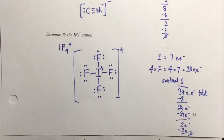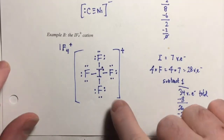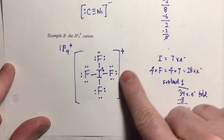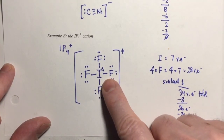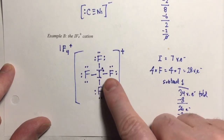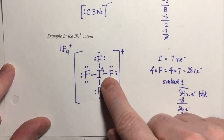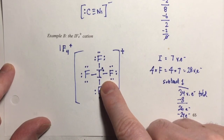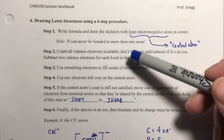So we put brackets around the whole species and write the positive charge. There is the Lewis structure for the IF4⁺ ion. Notice there is no three-dimensionality shown — everything is flat in the plane of the paper, because Lewis structures are not concerned with wedges, dashes, or three-dimensional geometry. Everything is drawn flat with straight lines for shared electrons and dots for unshared electrons. Those are the steps for how to draw a Lewis structure.